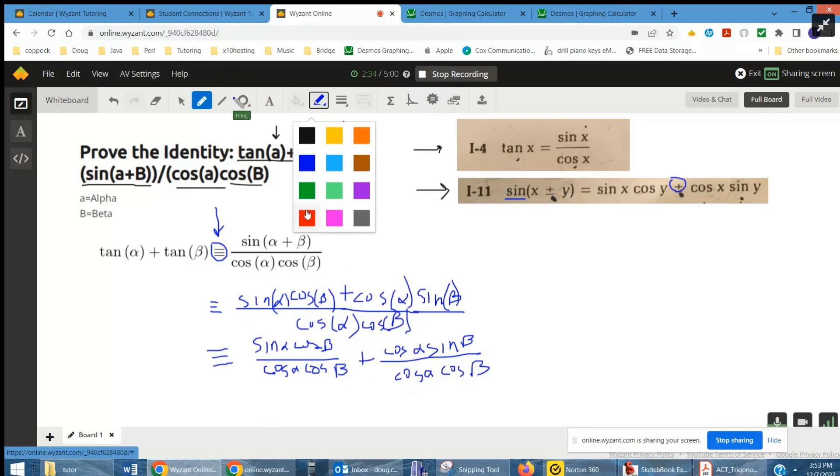And that's just arithmetic. For this first fraction, these cosine betas cancel out. For the second fraction, these cosine alphas cancel out.